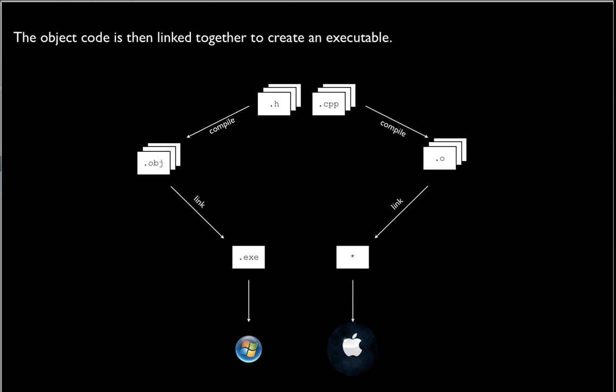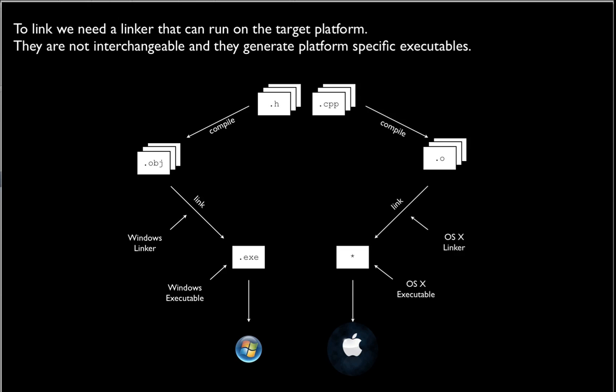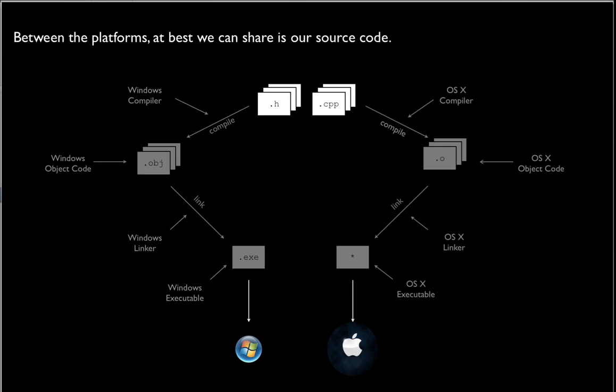After the compilation stage, we go through a linking phase to bring the executables together. The Windows linker runs on a Windows machine and links Windows object code into a Windows executable. Similarly, to get an executable for OSX, we need a linker that runs in OSX and pulls together object code files into something that can execute. In terms of sharing, the best we can do is share all our source code, maintain a single repository, and compile and link it into an executable for our target platform.